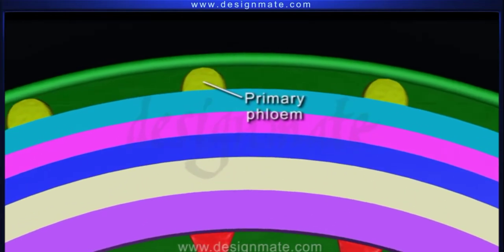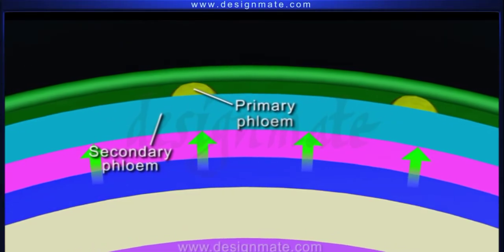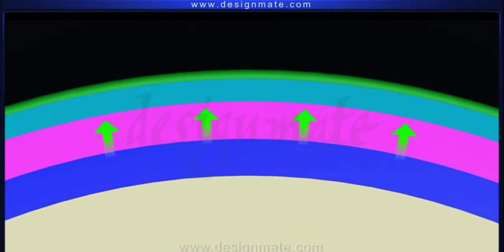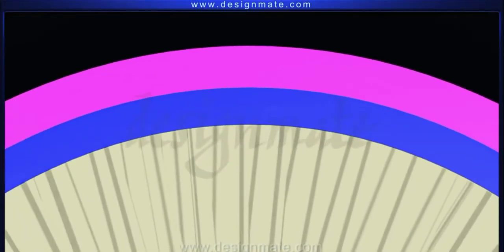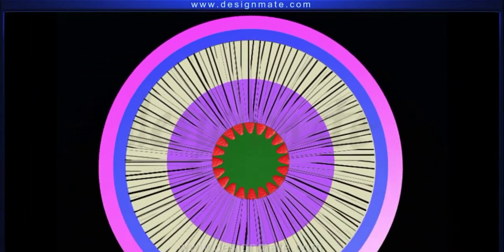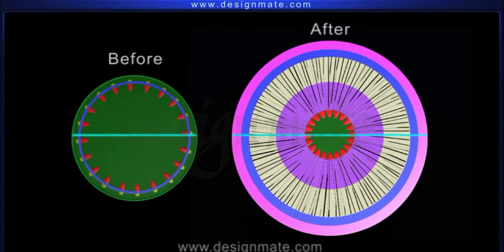Primary and secondary phloem of the earlier years get crushed. Some narrow bands of parenchyma cells form the secondary medullary rays. This is how the dicot stem has grown in diameter.